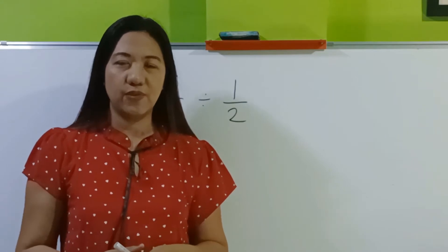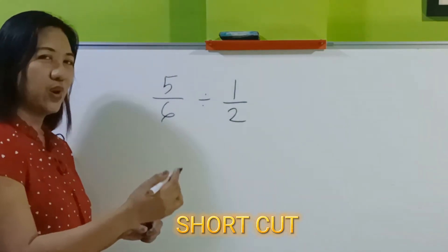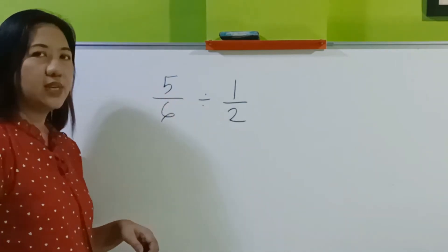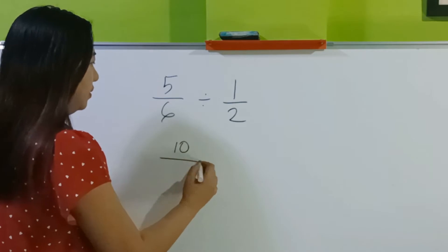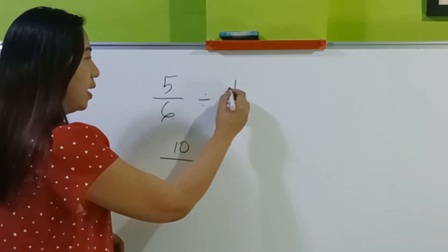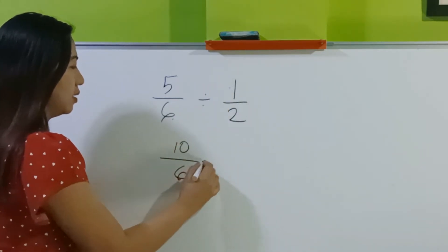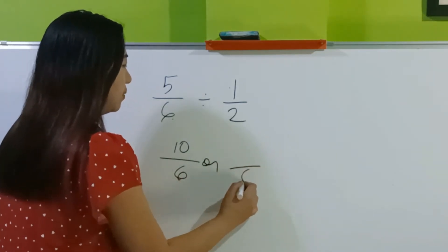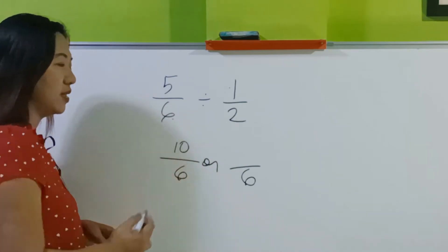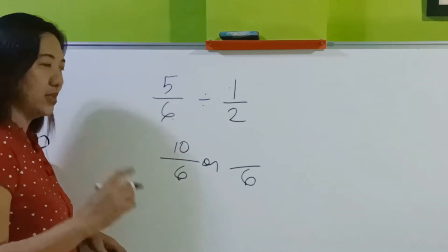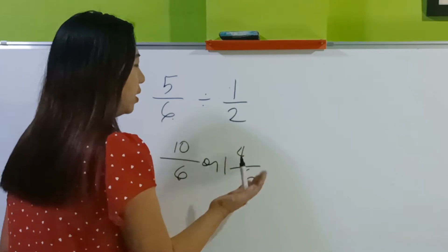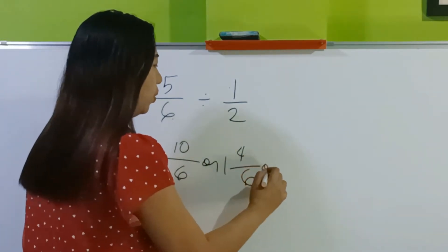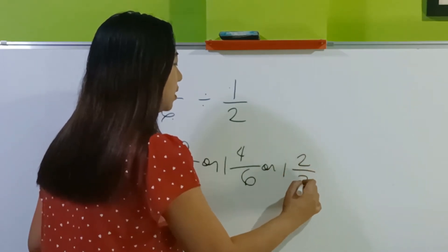Now let's have the shortcut. Just do cross multiplication: 2 times 5 is 10, 6 times 1 is 6. Simplify this. How many 6's are there in 10? 1, remainder 4. Can you still simplify the fraction? Yes — 1 and 2 thirds.